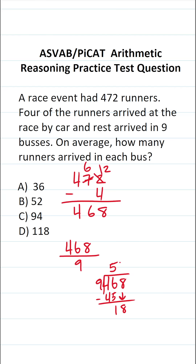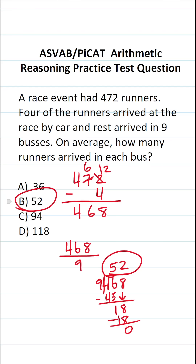9 times 2 is exactly 18, so we have no remainder. In other words, there were 52 runners on each of the nine buses on average. So the answer is B.